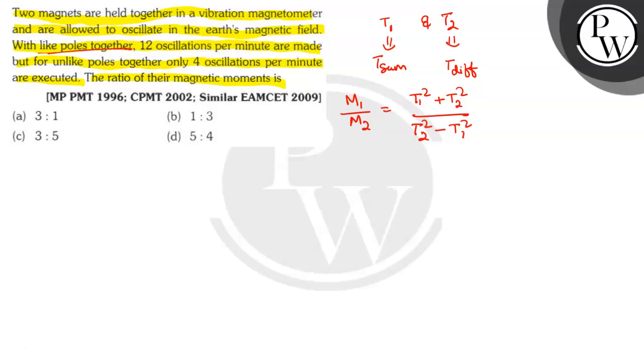With like poles together, this time when T sum comes, 12 oscillations per minute are made. So, what is the time period? T1 is T sum. 12 oscillations per minute means 12 by 60, 1 by 5 second. And T2 is T difference.